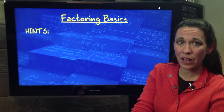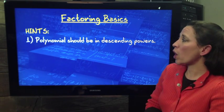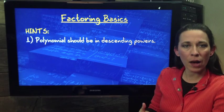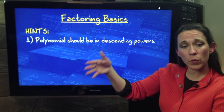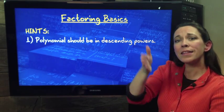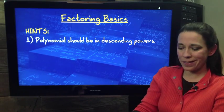Now, here are some hints. First of all, be sure your polynomial is in descending powers. In other words, have the highest exponent first, say x squared, then your x, and then your constant is always last.